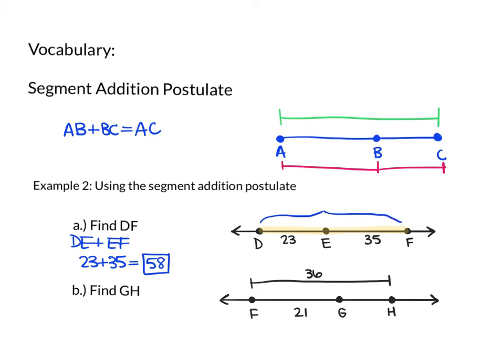Well, what if we don't have the two parts? That's what happens in example B. In example B, I'm asked to find GH. GH is actually one of the parts, but I know the whole segment. Let's think about this logically. I know that the segment addition postulate says this part plus this part equals this part. I could write myself a little equation if I wanted to. We'll call this X because it's what we don't know. So I know that 21 plus X should equal the whole thing, which is 36.